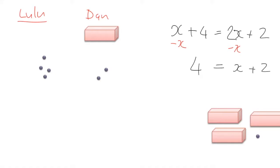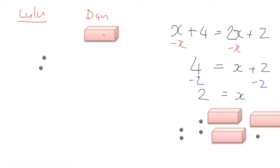Now I want to leave Dan just with boxes, so I'm going to take his two sweets away. But I have to always be fair — if I've taken two of his, I must take two of Lulu's. So Dan will just have the number of sweets in a box, and Lulu is left with two. That tells us there are two sweets in the box, because what Lulu has, Dan has.